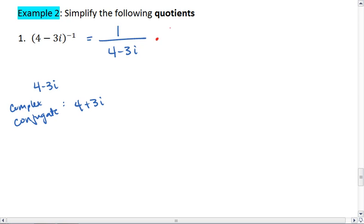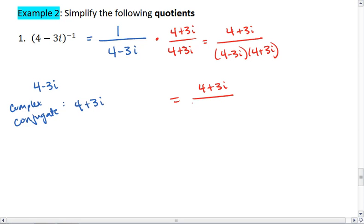We multiply both the numerator and the denominator by the complex conjugate, giving us 4 plus 3i all over 4 minus 3i times 4 plus 3i. If you multiply that out, you will get 16 plus 1. So our final answer is 4 plus 3i all over 17.